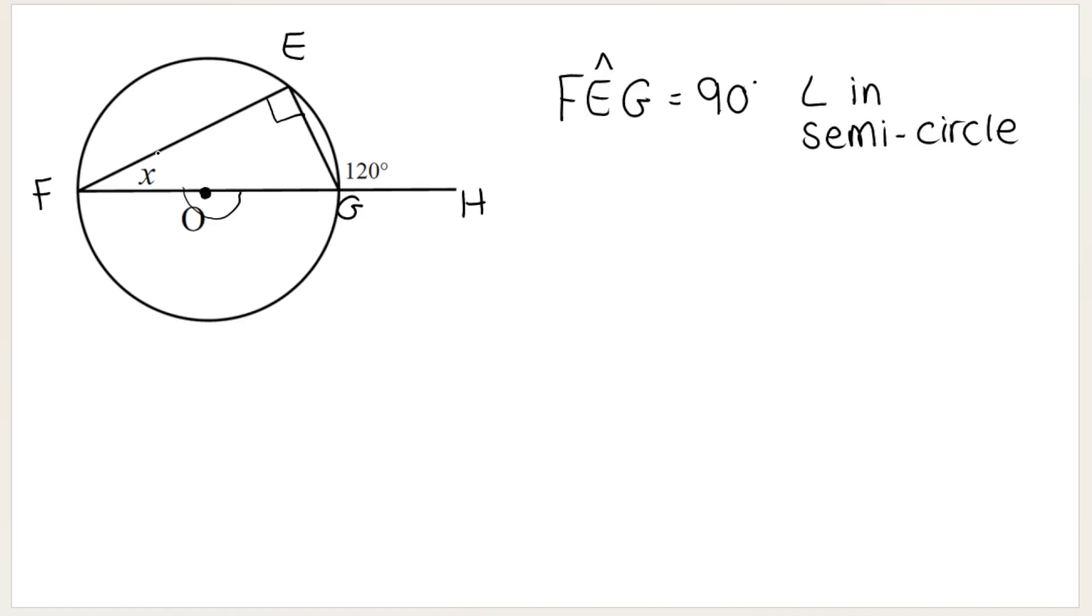And remember my goal is I'm trying to find X. So there's two different ways that you can actually do this. This is a triangle, and you can see that one of the lines of the triangle, FG, has been extended to give me H. So this angle over here is called exterior angle of a triangle. And as you should know, the exterior angle of the triangle, so 120, is equal to the sum, so adding together, of the two interior angles, 90 plus X. Your reason for that is exterior angle of triangle FEG, and therefore X is equal to 30 degrees.